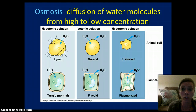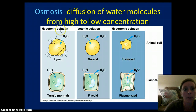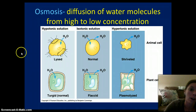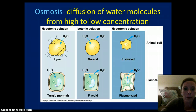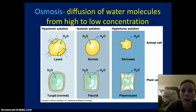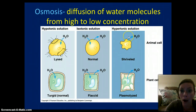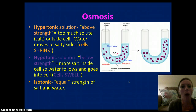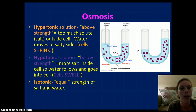Osmosis is the diffusion of water molecules — only water molecules — from high concentration to low concentration. We have three types. One is called a hypotonic solution: water is going to move into the cell, and the cell could burst if it's an animal cell; if it's a plant cell, it's just going to swell because it has support from the cell wall. Isotonic solution: it's equal on both sides. And then a hypertonic solution: there is a higher concentration of solute, therefore the water is going to move out of the cell and it will shrivel up. If it's a plant cell, it will wilt. Hypertonic solution is above strength — too much solute or salt dissolved within the water, so the cell will shrink.